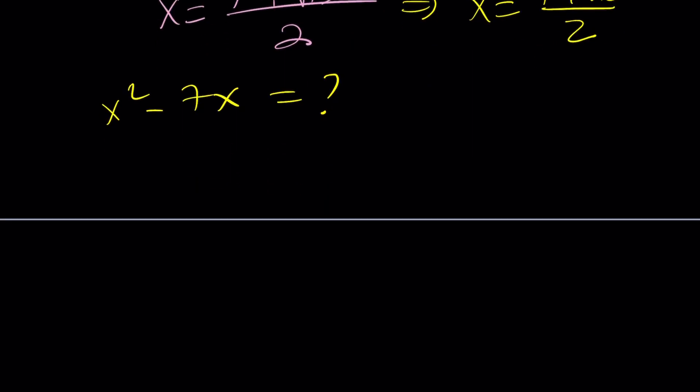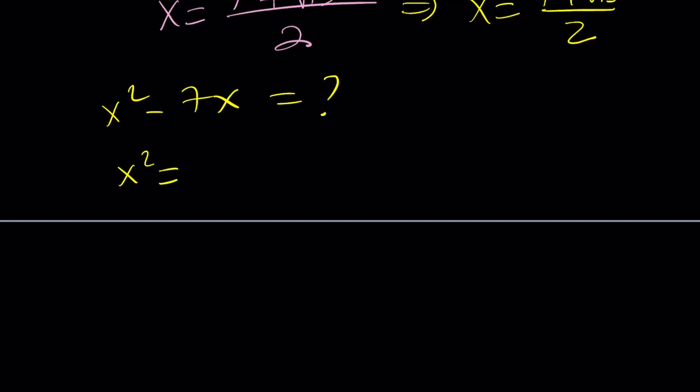Let's go ahead and find out what x² is. x² is going to be 7 plus root 13 over 2 to the second power. So we're going to square the numerator. It's going to give us a plus b quantity squared. x² is going to be a² plus b² plus 2ab. That's how I usually do these things. Divided by 2 squared, which is 4.